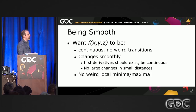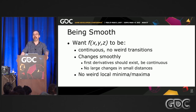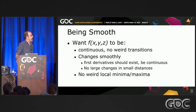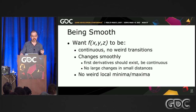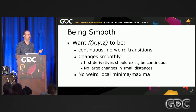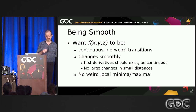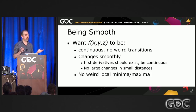So first, let's talk about what we mean by smooth. We would like the function on the mesh to be continuous in the standard sense — no jumps, no point discontinuities, no weird transitions. We'd like the derivatives of the function to exist and be continuous, so no huge changes over small distances. And we don't want any local maxima or minima — no point that just randomly gets hot or cold for no good reason.